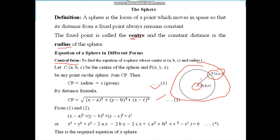So equations (1) and (2) give this equation: CP² = (x - a)² + (y - b)² + (z - c)². So it is our most general equation, that is center-radius form of sphere.